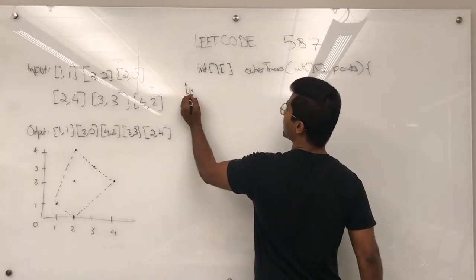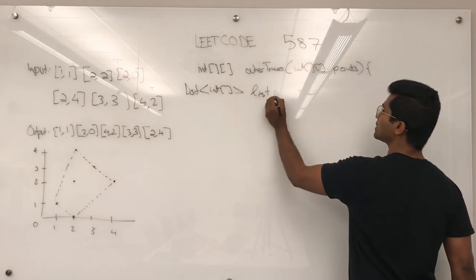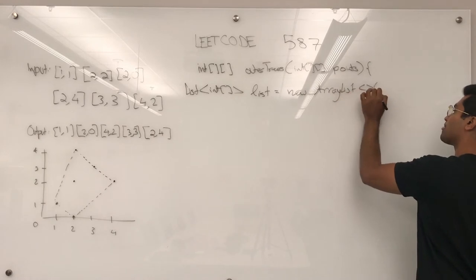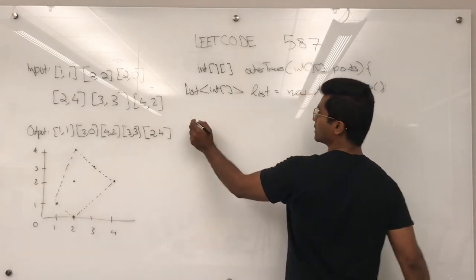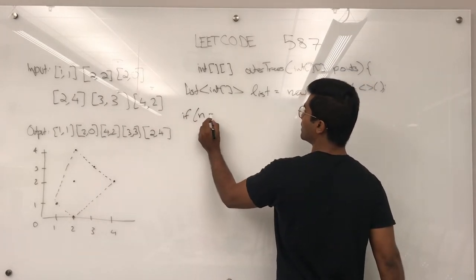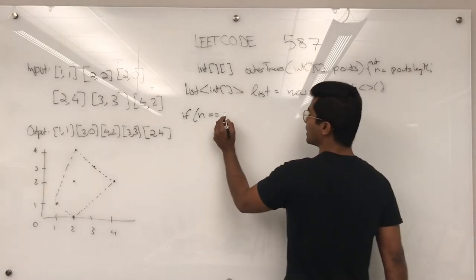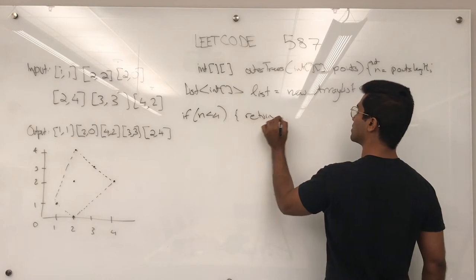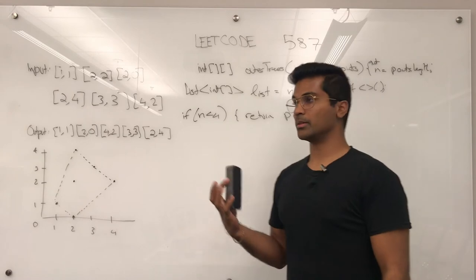Now, we can add all the points to a list of integer arrays. I'm going to call it list new array list. And the first thing we have to do is check the base case. If there is less than four points, we just return points. If n, where n is equal to points dot length, n is less than four, we return points itself.